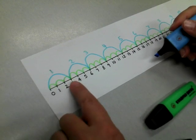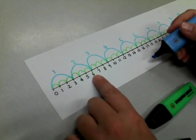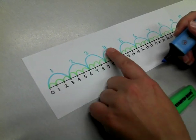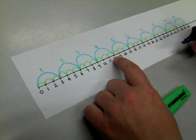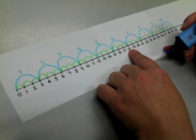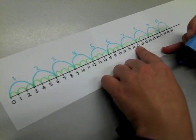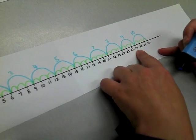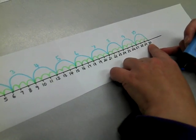So one three is three, two threes are six, three threes are nine, four threes are twelve, five threes are fifteen, six threes are eighteen, seven threes are twenty-one, eight threes are twenty-four, nine threes are twenty-seven, and ten threes are thirty.